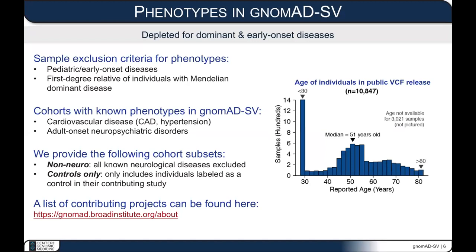The reference is very approximately representative of the general adult population — the average age of a sample in gnomAD SV is 51 years old. However, given aggregation across many common and complex disease studies, some particular diseases are enriched. The most prevalent in gnomAD SV is cardiovascular diseases like myocardial infarction and coronary artery disease, and there are also some non-trivial numbers of adult-onset neuropsychiatric disorders. As the dataset grows in scale, these biases will continue to dissipate.